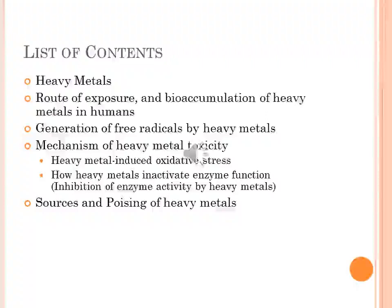What is the root of exposure, uptake and bioaccumulation of heavy metals into humans? This has been explained by the Prochard Diagram. Note: generation of key radicals such as hydroxyl radical by heavy metals causing potential toxicity. Mechanism of heavy metal toxicity includes heavy metal induced oxidative stress and oxidation of certain biological molecules. How heavy metals inactivate enzyme function. The sources and poisoning of heavy metals: lead, arsenic, chromium, cobalt.